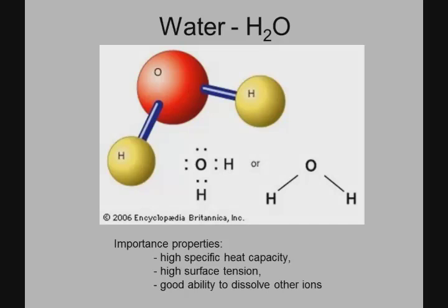That bent shape gives water a lot of really important properties. High specific heat capacity — so in our lakes and oceans, they'll warm up over summer and stay warm for a long period of time, so we can go swimming in September. It has high surface tension, because of the shape and also the way that water bonds with other water molecules. And it has a good ability to dissolve ions.